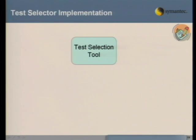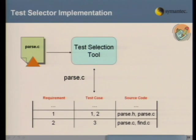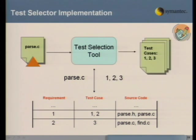When you go back to actually use this information, let's say there's a source change on the parse.c file. You can look back into your tables and say, with some amount of certainty, these source files are associated with these test cases based on the requirements we have checked in. Hence, those are probably good test cases to run.